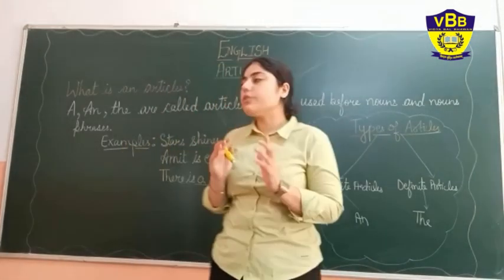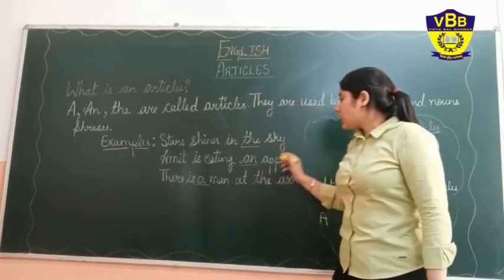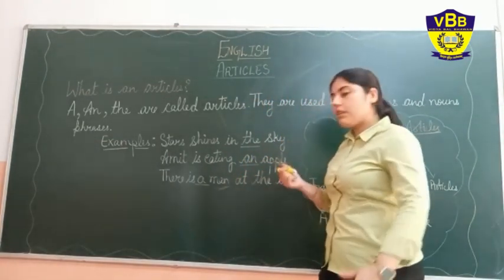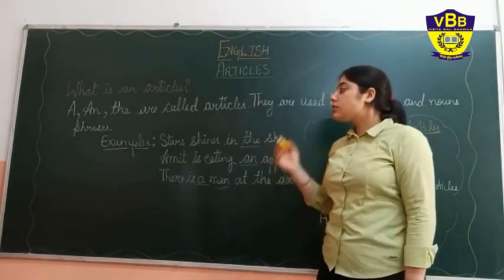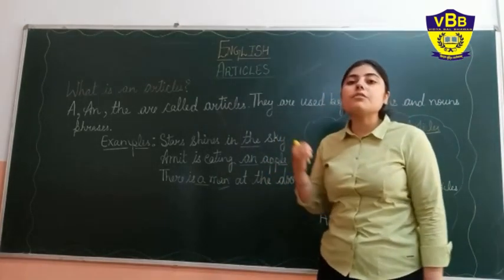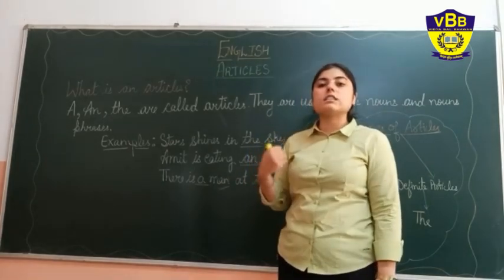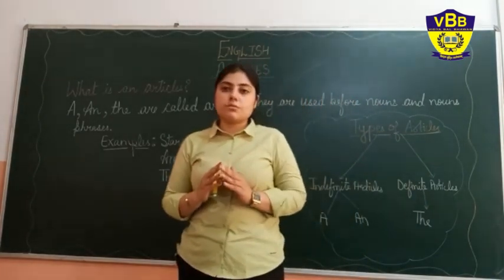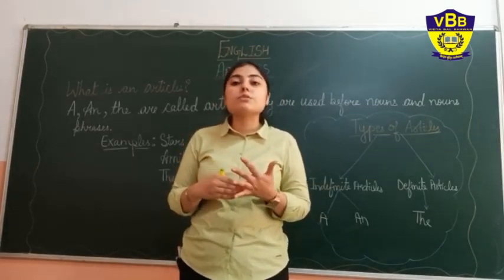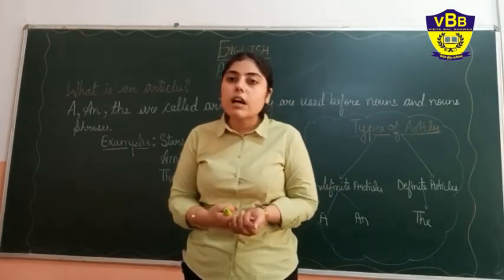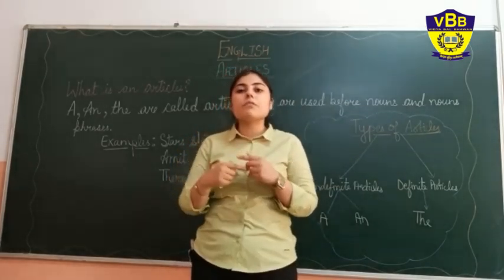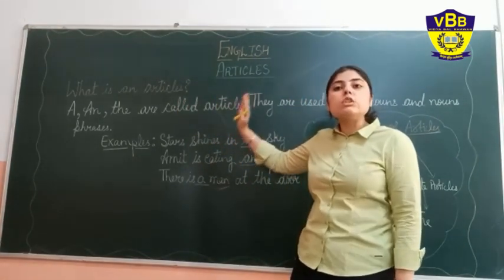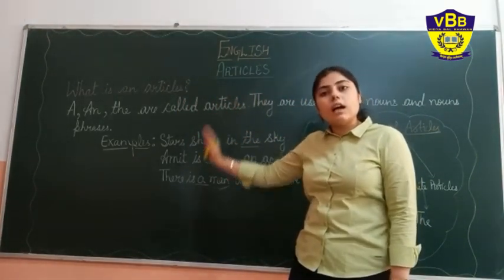Have you noticed one thing? Apple — one. Man — one. Sky — one. So always remember, whenever we are using articles, articles always go before a countable noun. Countable nouns are nouns which can be counted. Always remember: articles are used before countable nouns.